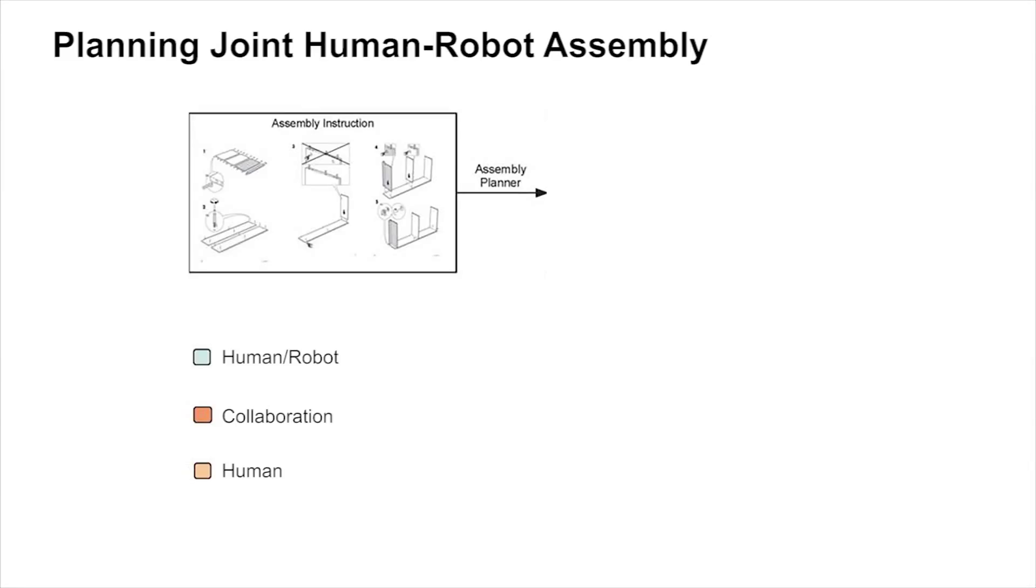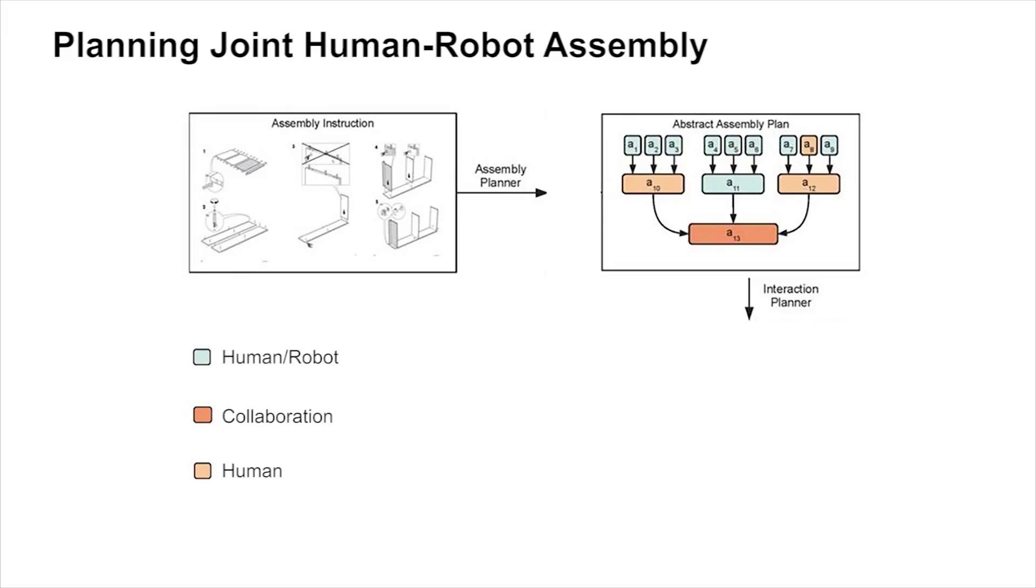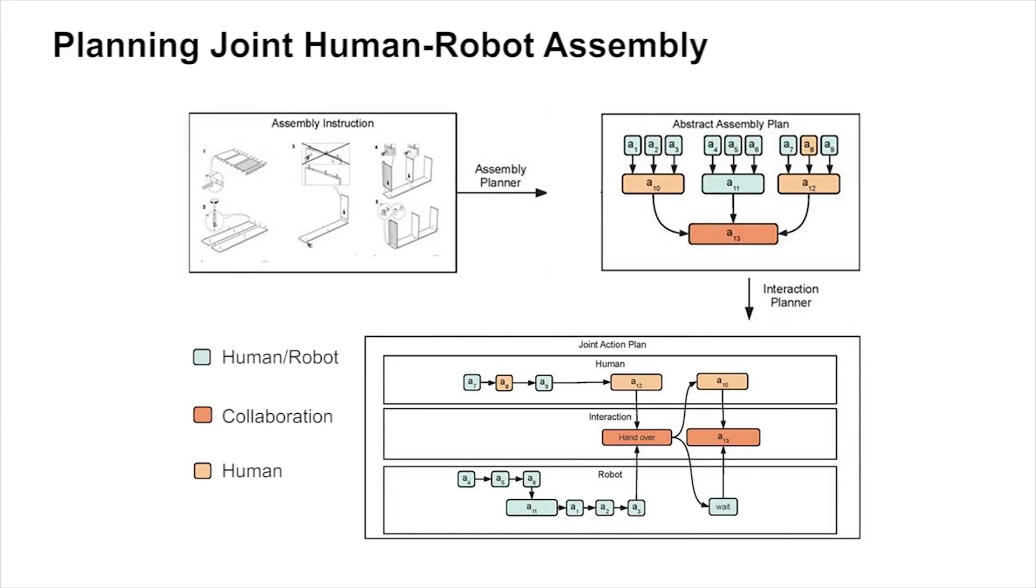Our joint assembly planner works as follows. After assembly instructions are automatically converted into an abstract assembly plan, a joint action plan is created by an interaction planner.